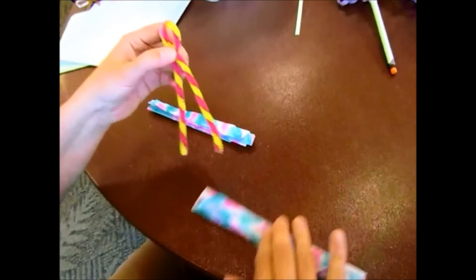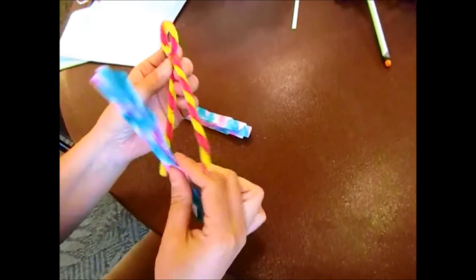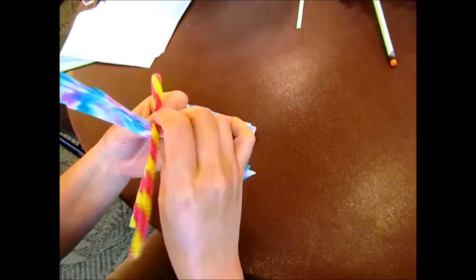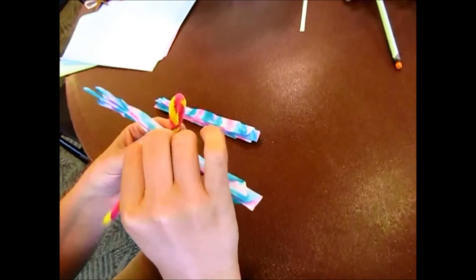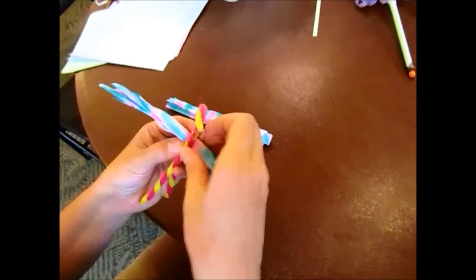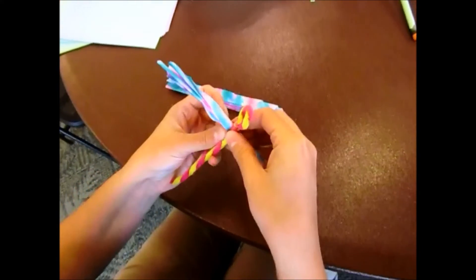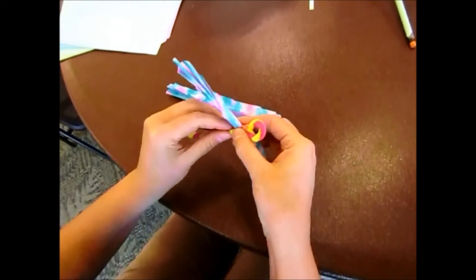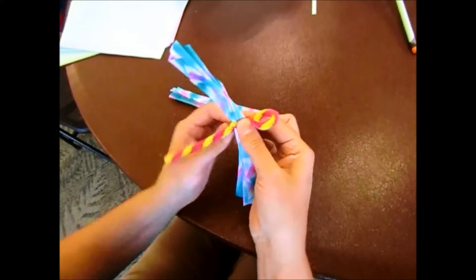After you do that, you are going to take one of your filters that's still folded up and wedge it in between the pipe cleaner, and then twist the pipe cleaners together so that it